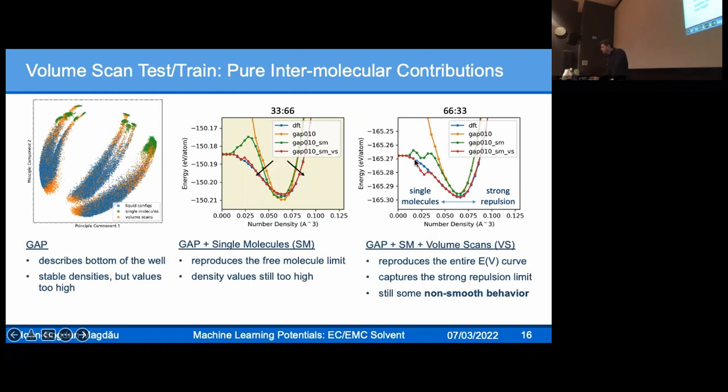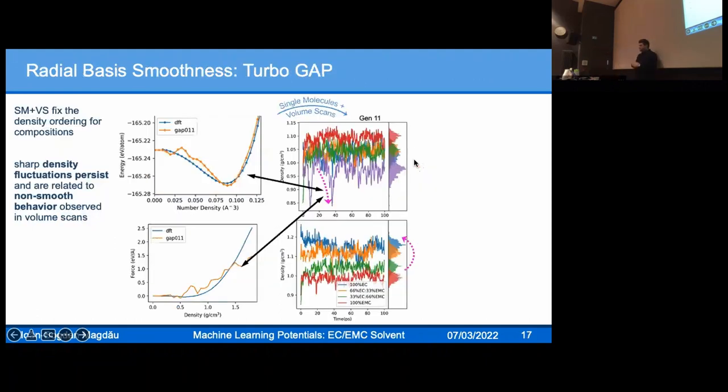The shrewd ones might notice this energy curve looks still quite non-smooth. It turns out that yes, once you add the single molecules and volume scans to training, you do fix this density ordering problem. But we find this new type of pathologies where the densities quickly have an excursion, drop by 20% and immediately recover. It turns out these density excursions are related to some of the non-smoothness of the energy binding curves. Also, the forces that molecules experience are quite non-smooth. This is the DFT total force summed over all atoms for one molecule compared to the GAP force.